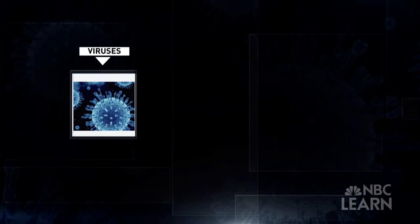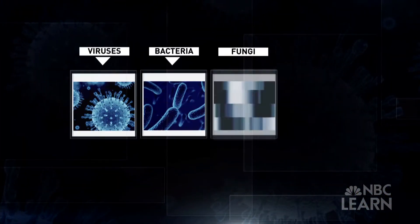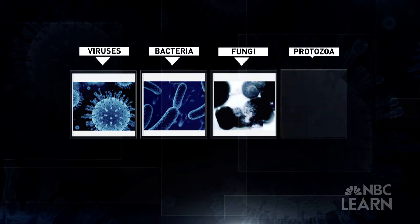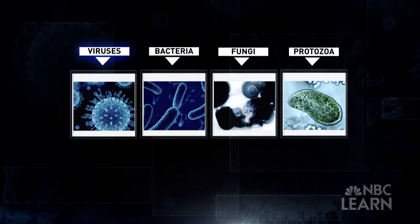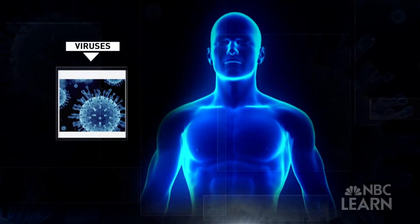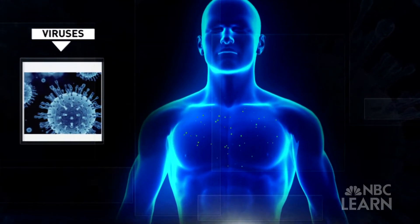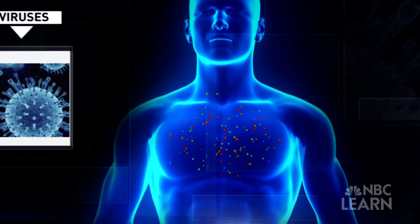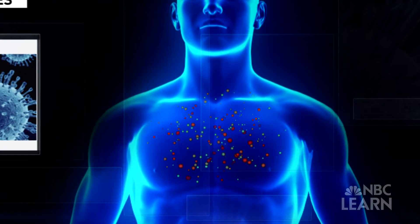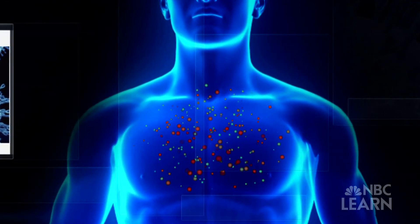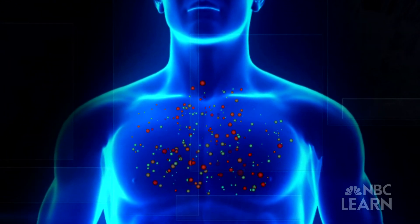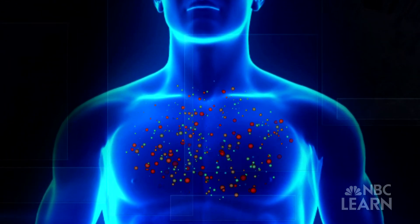What distinguishes viruses from other pathogens — bacteria, fungi, and protozoa — is that viruses require a living host, such as a human, to help them reproduce. They can't survive on their own. They really need the machinery of hosts to replicate and spread.